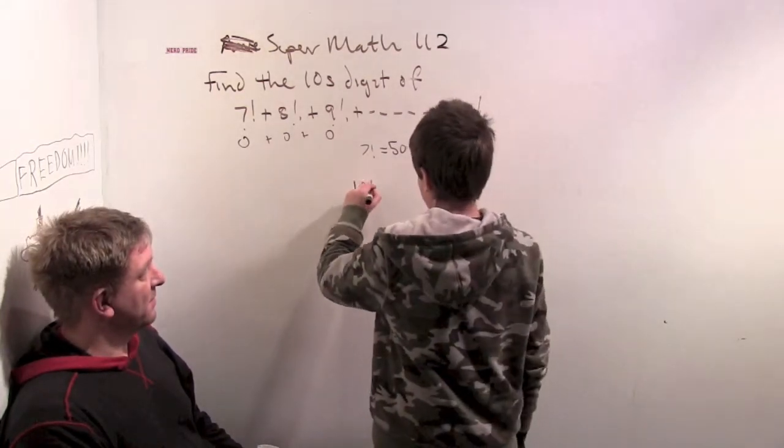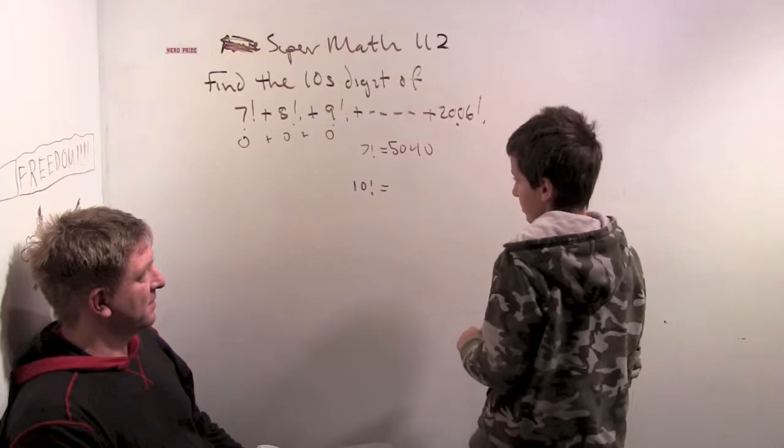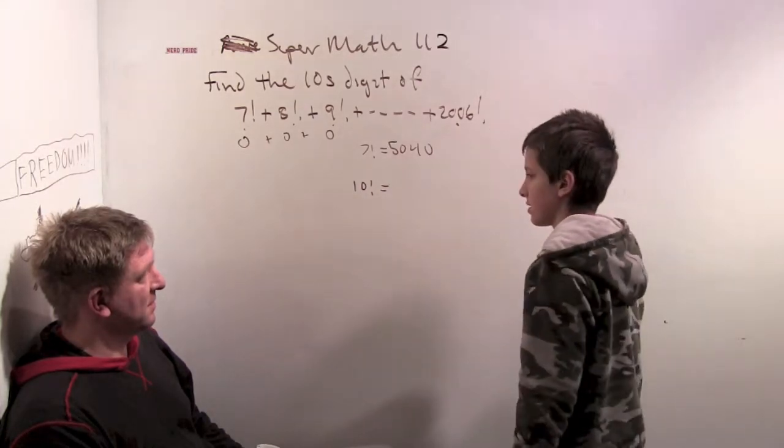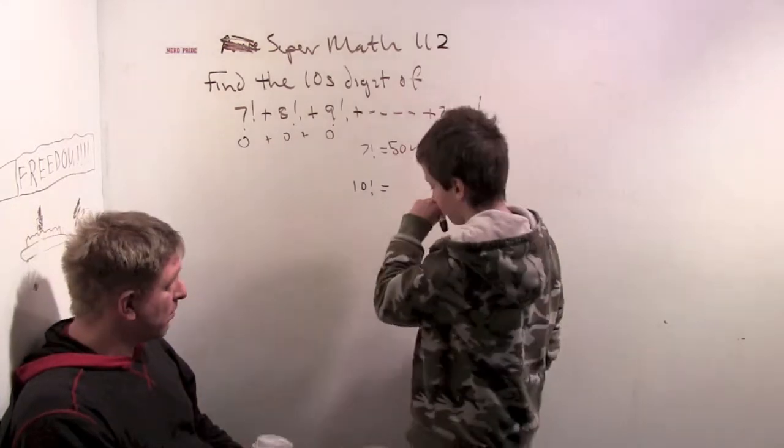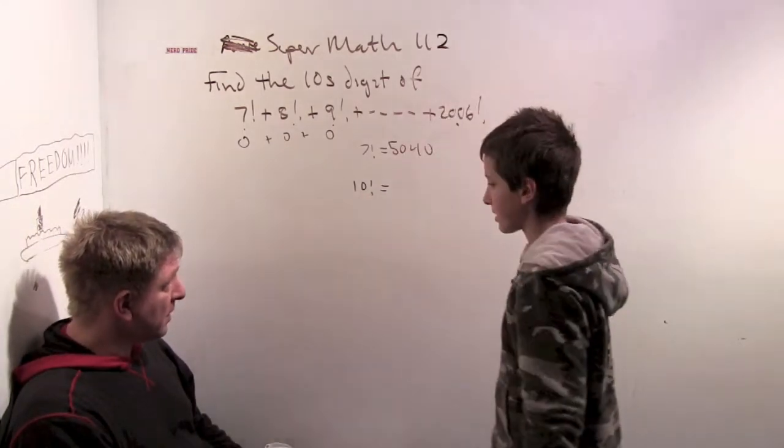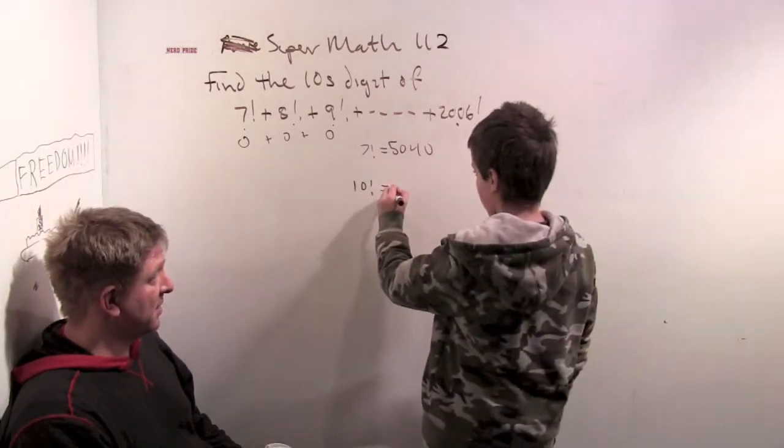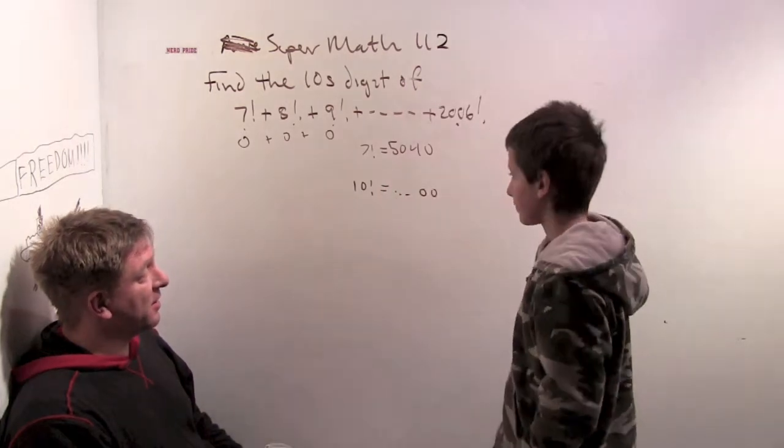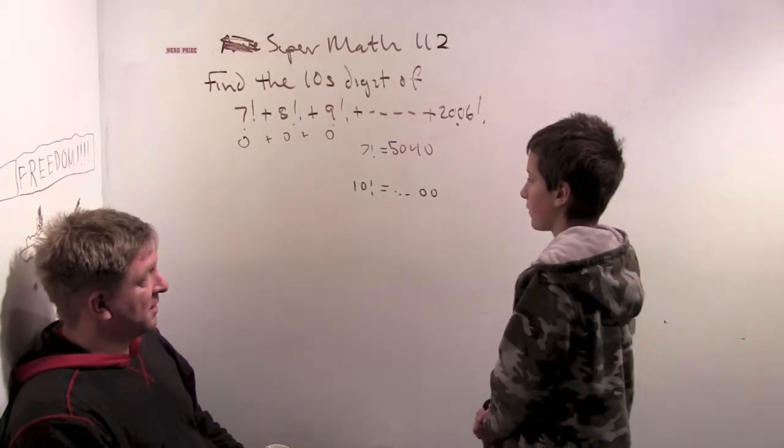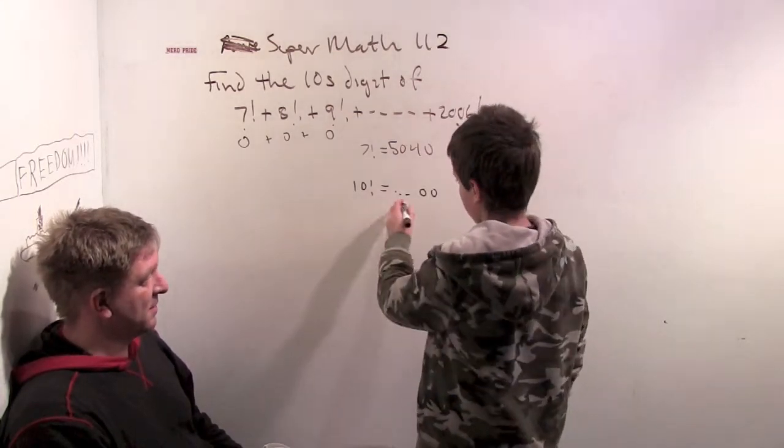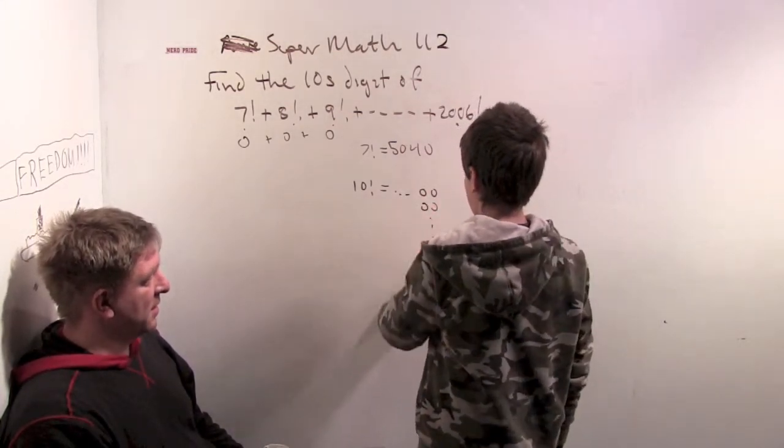Well, ten factorial is 10 times 9 times all the way down to 1. This has two 2s and two 5s in it. So this is going to end in 0, 0. So ten factorial interestingly enough ends in 0, 0. And eleven factorial would end in the same, it would still end in 0, 0.